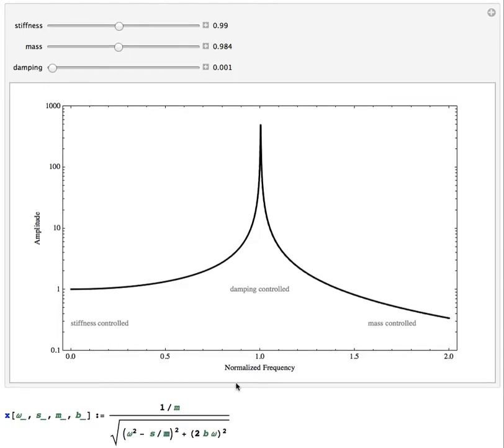So here's a plot of the response of a force-driven oscillator with damping. The equation down here shows the amplitude. I've called the force 1. I've written the natural frequency omega_0 as S over M.